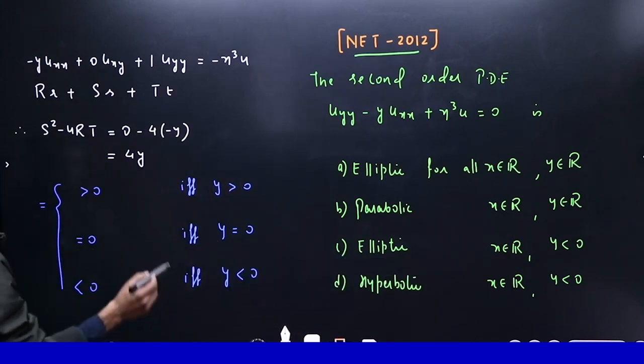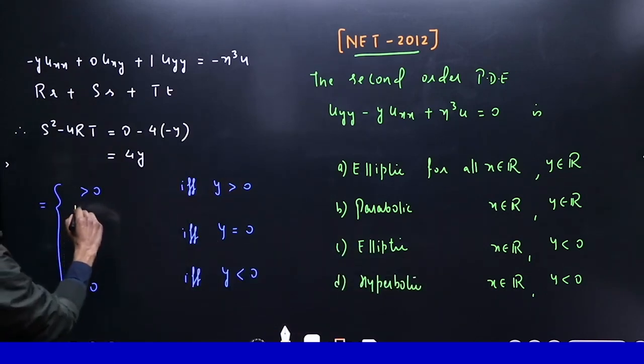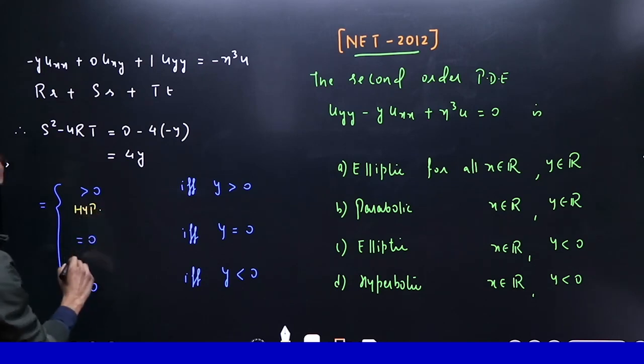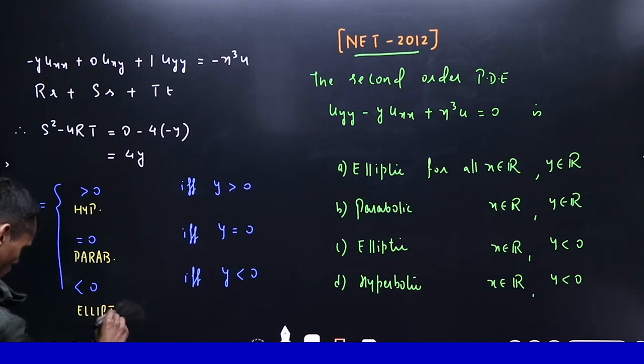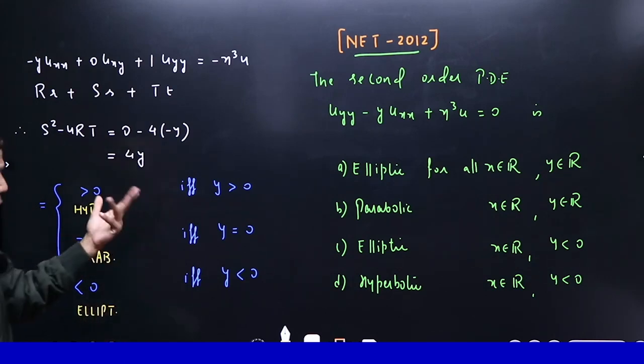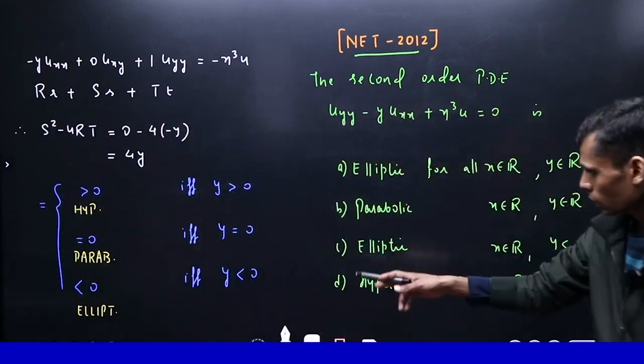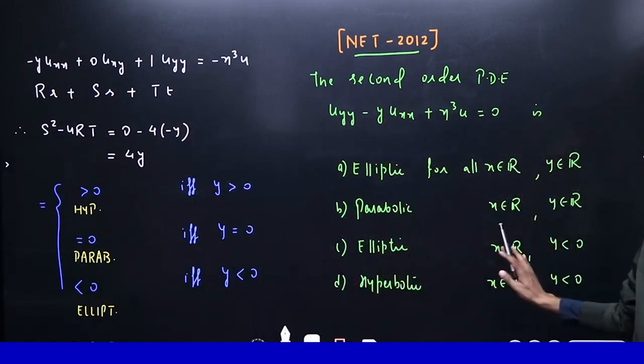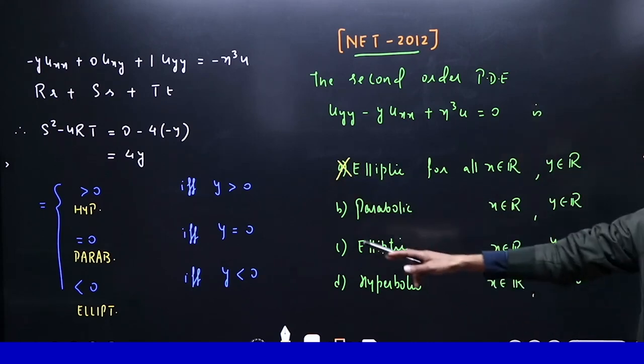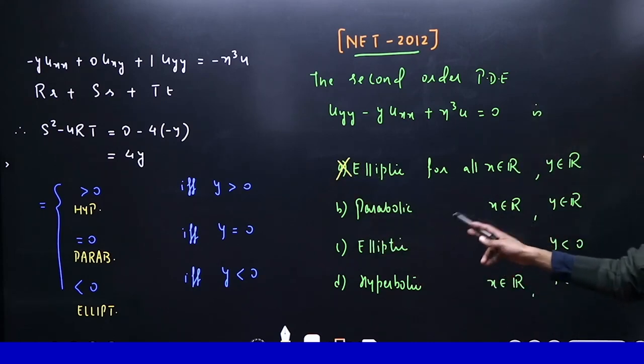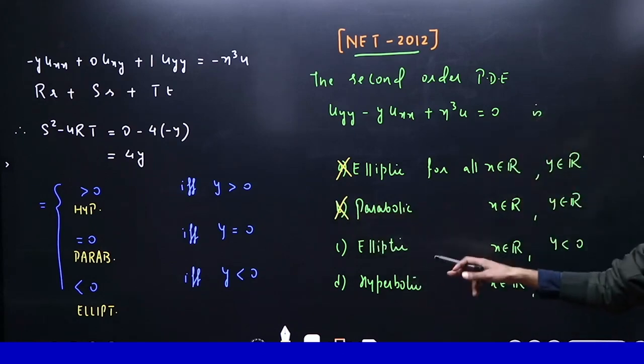Yes students. Positive ka matlab hyperbolic. Equal to ka matlab parabolic. And less than 0 ka matlab elliptic. So it was happened with the elliptic. In the first there is y negative. Elliptic hone ke liye Y ko negative hone chahiye. No. Parabolic hone ke liye Y ko 0 hona chahiye. And then elliptic hone ke liye Y ko less than 0 hone chahiye. This is true.